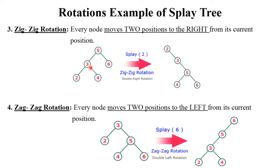Next is zig-zig rotation — zig-zig means right-right or double right rotation. See here, you need to perform zig-zig rotation on node two. After performing zig-zig rotation, two becomes the root of the tree. First right rotation: two moves to the right side, three moves here, and four moves here. Then again right rotation: two moves to the right side, five is here, and six is here. Finally this binary tree is generated and two becomes root of the tree.